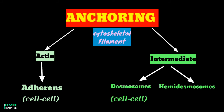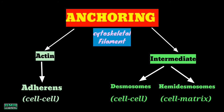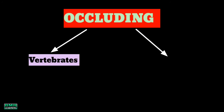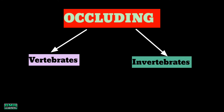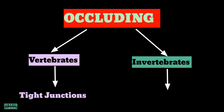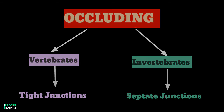The desmosome junction is found between two cells, but the hemidesmosome is present between a cell and the extracellular matrix. Moving to the second class, the occluding junctions, they are classified according to their presence in vertebrates or invertebrates. In vertebrates they are called tight junctions, and in invertebrates they are referred to as septate junctions.